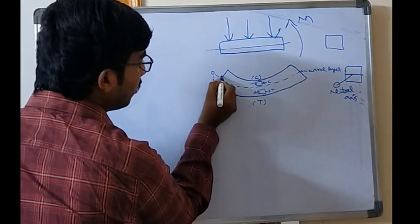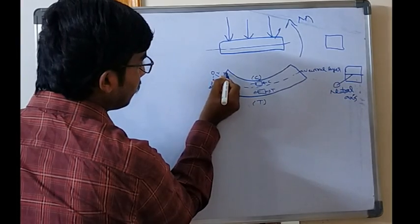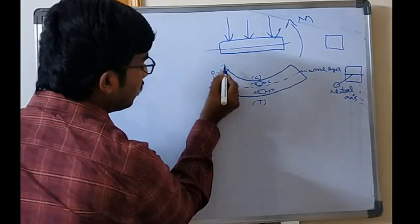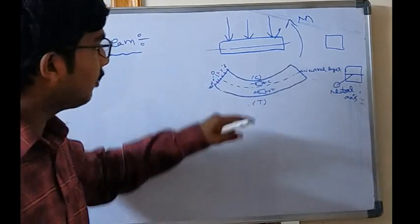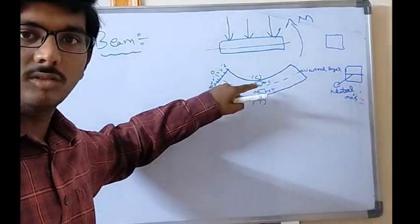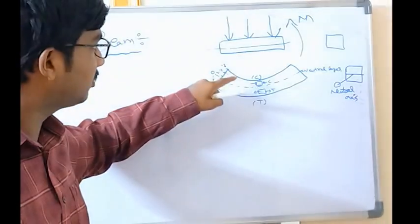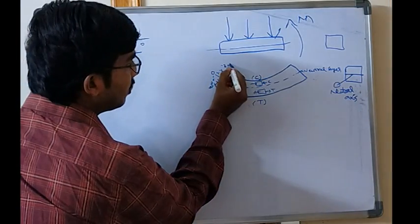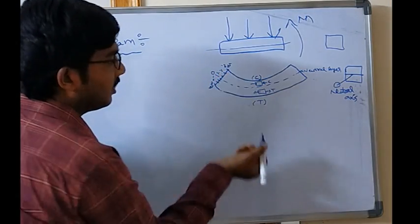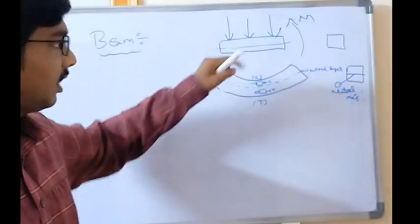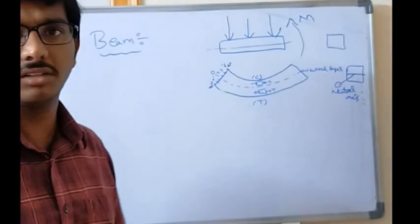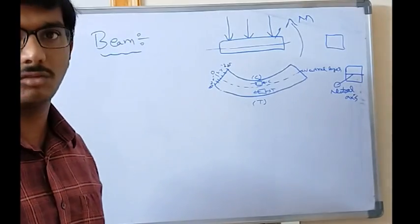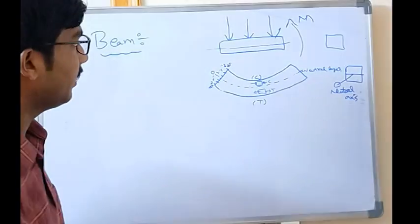Similarly, when you go in the upper direction: minus one, minus two, minus three. That means the topmost fiber will be subjected to compressive stress of minus three newtons. I am taking tension as positive and compression as negative — you can take it vice versa.